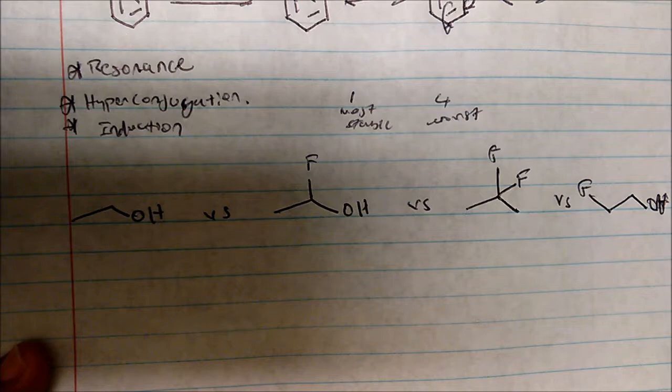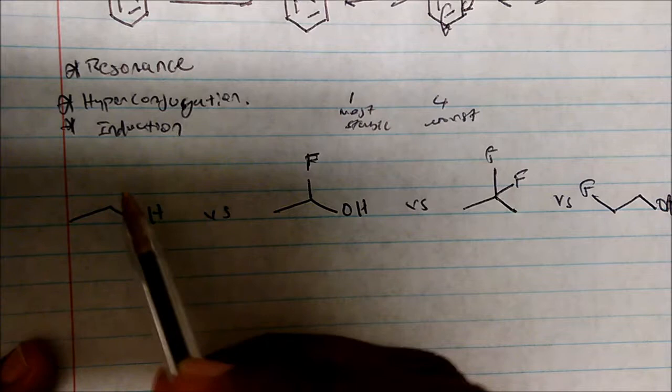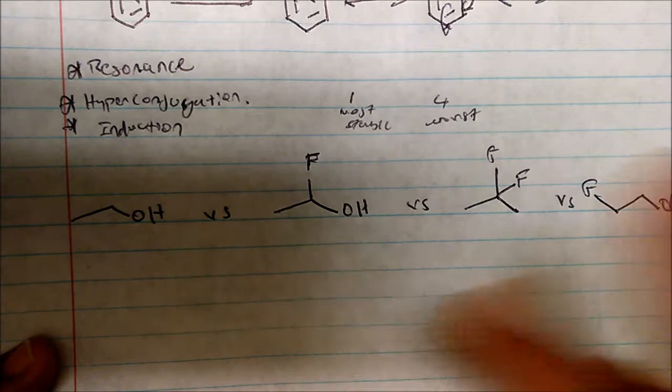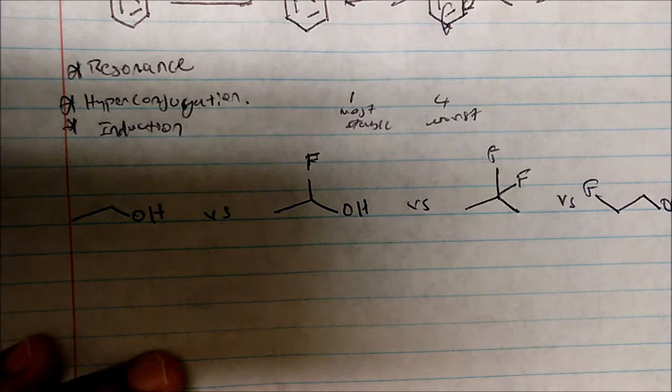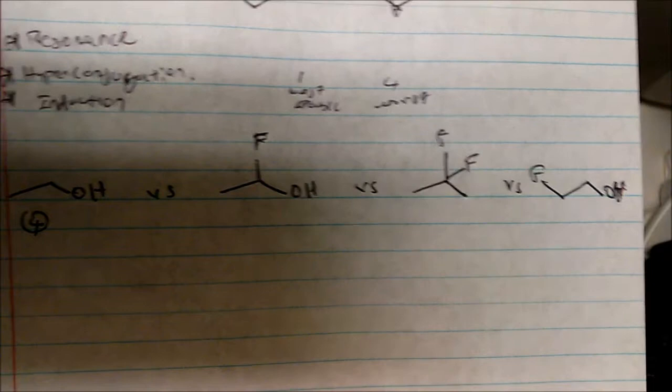The worst alcohol — number four — is the one with no electronegative atom on the carbon connecting the alcohol group. There is no electron-withdrawing effect on the oxygen, so the oxygen is very stable and it's very hard to remove that hydrogen. This would be ranked number four.